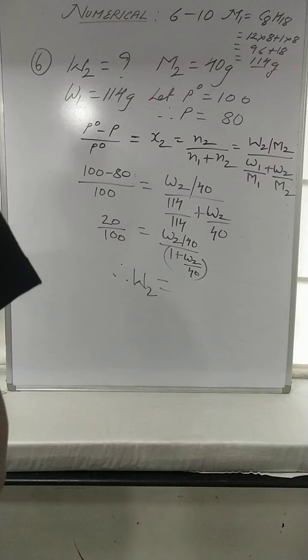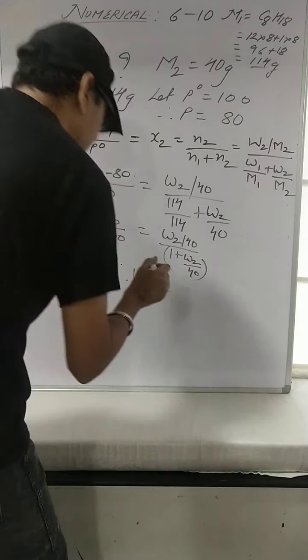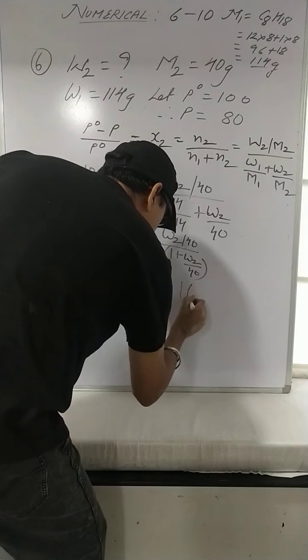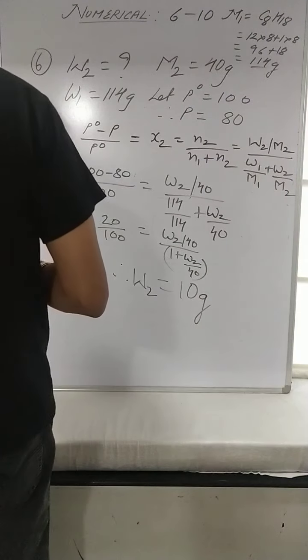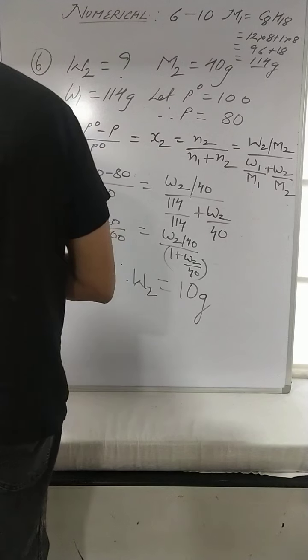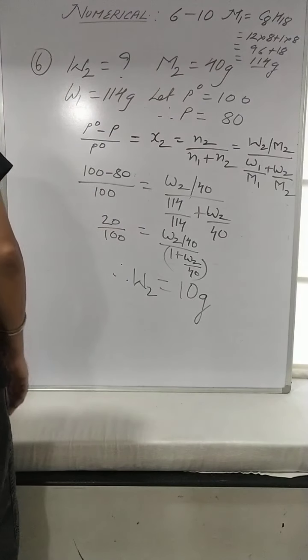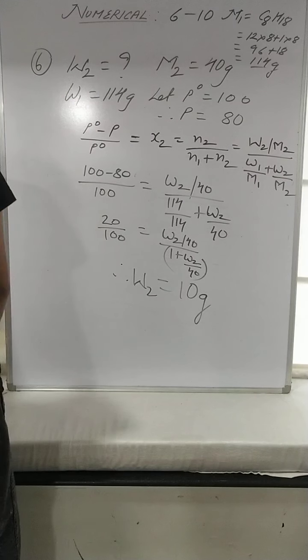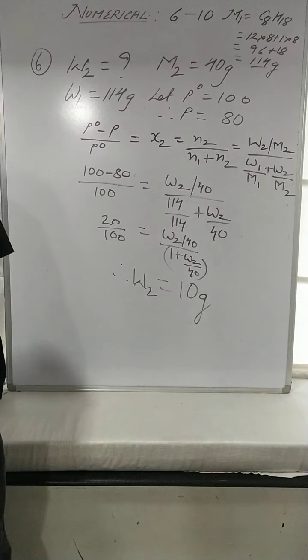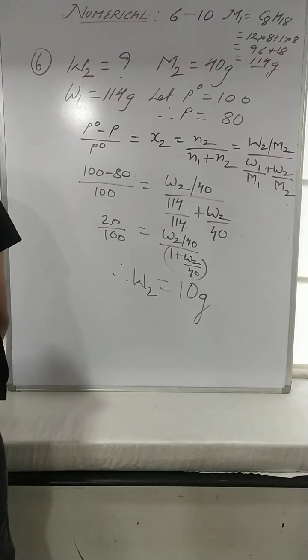After solving, you should get W2 = 10 grams. So that is numerical number 6. Let's go to numerical number 7.